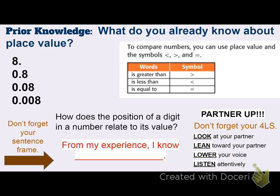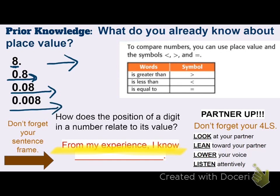Before we get into comparing decimals today, I want you to think about what you already know about place value. Place value represents the worth or the value of a number. So if we look at the first eight written, that's in the ones place — eight one-dollar bills. As we move further to the right, the value gets ten times smaller. So 8 tenths is 80 cents, or ten times smaller than $8. As we continue to move right, it keeps getting smaller. Eight pennies, 8 cents, is smaller than 80 cents — it's ten times smaller. And finally, 8 thousandths is ten times smaller than 8 hundredths.